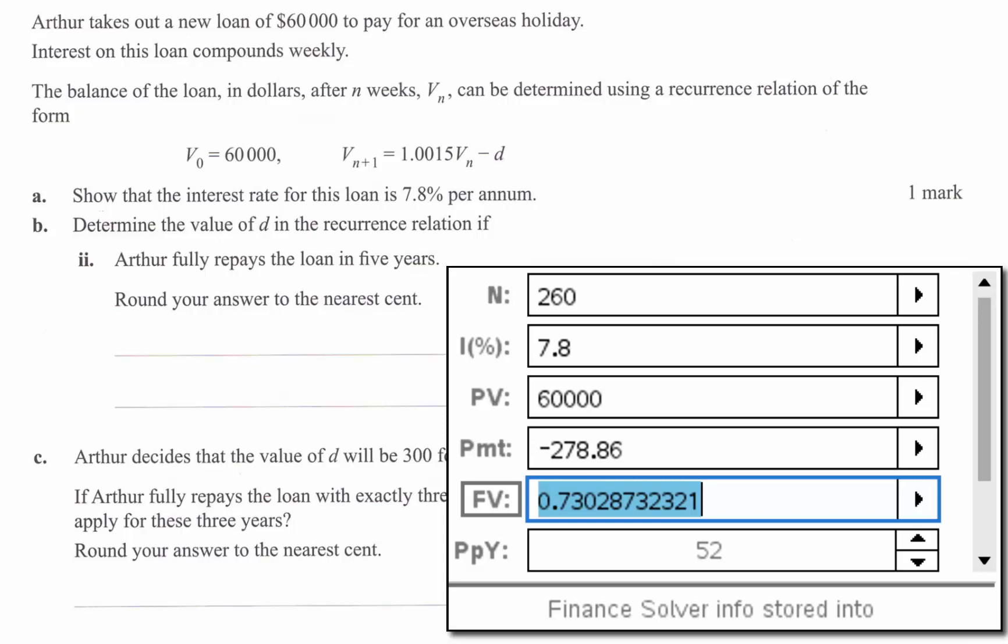But that's the best you can hope for if you do want to fully repay the loan with a constant value of D and not have a different final payment. All right but that's the natural rounding so maybe not a big issue.